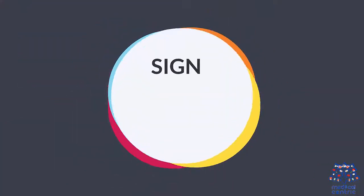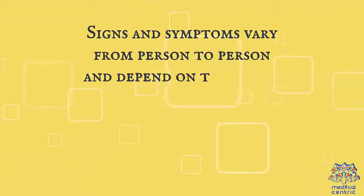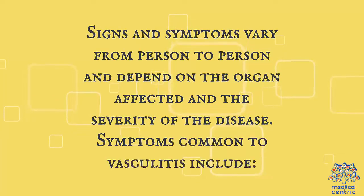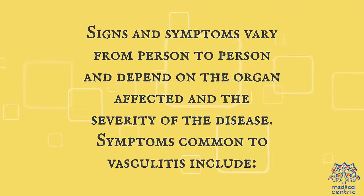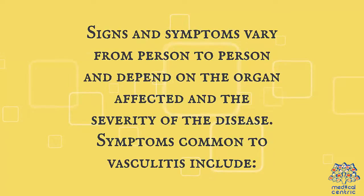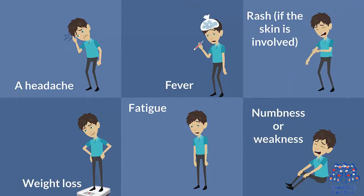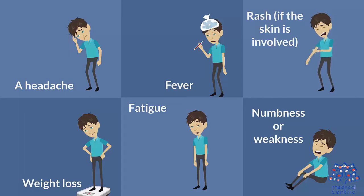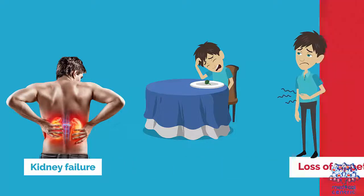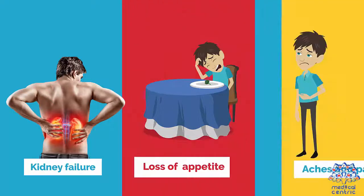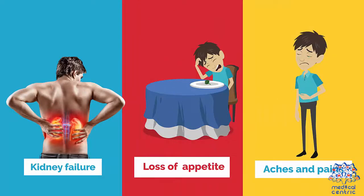Signs and symptoms. Signs and symptoms vary from person to person, and depending on the organ affected and the severity of the disease, symptoms common to vasculitis include a headache, fever, rash if skin is involved, weight loss, fatigue, numbness or weakness, kidney failure, loss of appetite, and aches and pains.